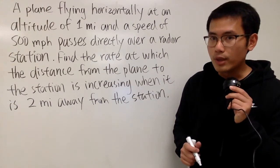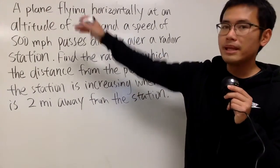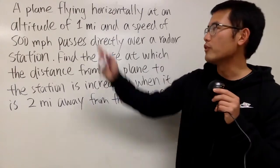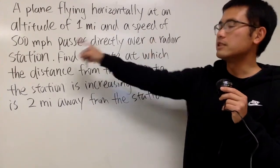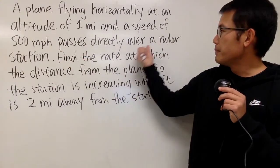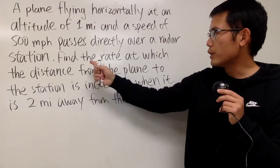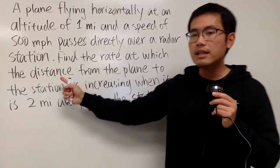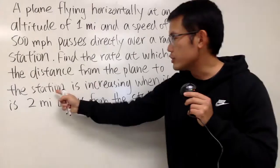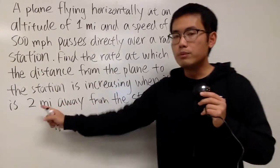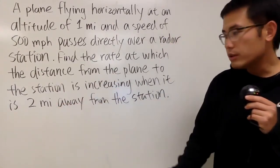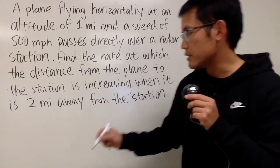Okay, another related question. Here is the deal. We have an airplane flying horizontally at an altitude of 1 mile, and we know that the speed is 500 miles per hour. It passes a radar station.